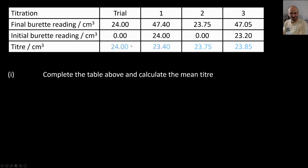Next one, calculate the mean titre. Make sure that you use concordant results only, so those which are close to each other by 0.1 centimeter cube, and then you do the average, which is the easiest part of the question.